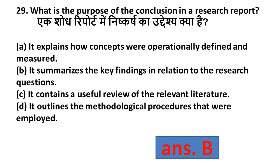Question 29: What is the purpose of the conclusion in a research report? Option A: It explains how concepts were operationally defined and measured; Option B: It summarizes the key findings in relation to the research questions; Option C: It contains a useful review of relevant literature; Option D: It outlines the methodological procedures employed. The right answer is Option B — the conclusion summarizes key findings in relation to the research question.